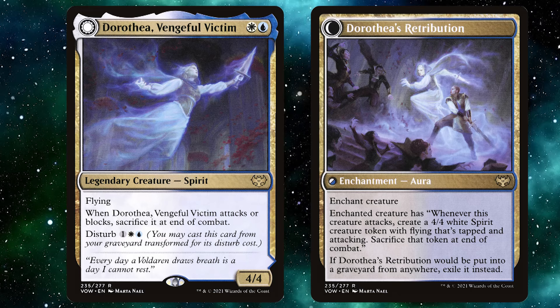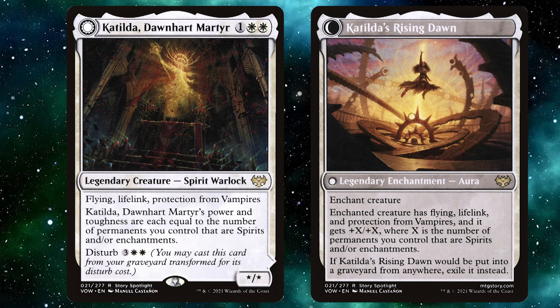From my quick research, let me know if there are any others — I found two commanders that can flip into an enchant creature: Dorothea, Vengeful Victim and Katilda, Dawnhart Martyr. Let me know if you use them, because I've seen one of them used as a really useful commander and one not really played. If you have a Moxfield deck or anything like that, I'd love to see people's decks.